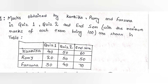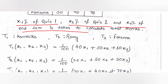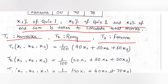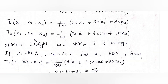The marks obtained by Kartika, Rumi, and Farzana in Quiz 1, Quiz 2, and End Semester are given in the table, and we have to calculate x1 percent of Quiz 1, x2 percent of Quiz 2, and x3 percent of End Semester to get the total marks. T1 is Kartika, T2 is Rumi, T3 is Farzana. So T1(x1, x2, x3) = (1/100)(40x1 + 50x2 + 60x3). For T2: T2(x1, x2, x3) = (1/100)(20x1 + 50x2 + 50x3). For T3: T3(x1, x2, x3) = (1/100)(30x1 + 40x2 + 70x3).